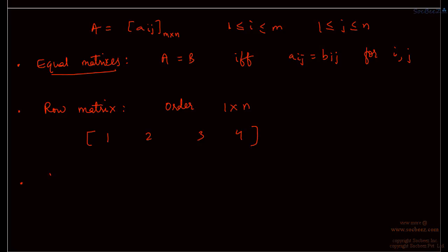Similarly, the column counterpart is known as a column matrix, and this has only one column. So the order here is m cross 1. This will be something like 5, 6, 7 — there are three rows here but only one column.